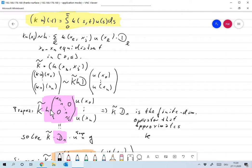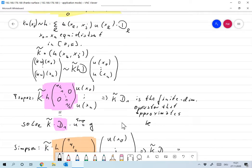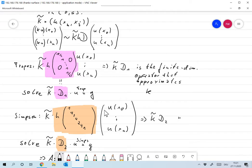This K tilde h times d is an approximation of the discrete approximation of the infinite dimensional operator K. So K tilde d_1 is the finite dimensional operator that approximates K. Given a measurement vector g, we arrive at a matrix equation and get K tilde times d_1 times a u approximation. All I have to do is solve this equation for the least squares solution, minimum norm solution.